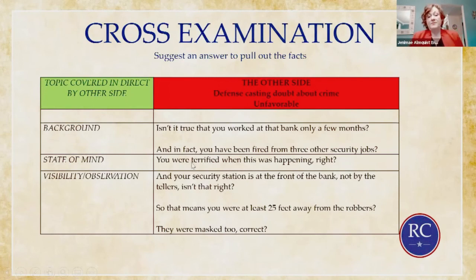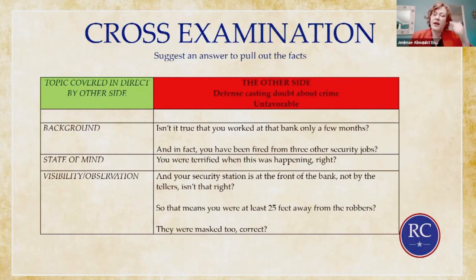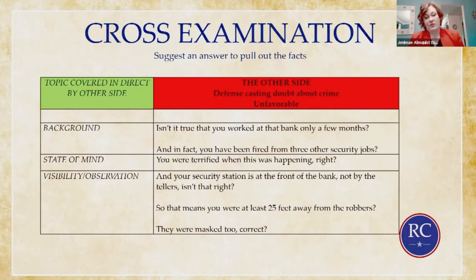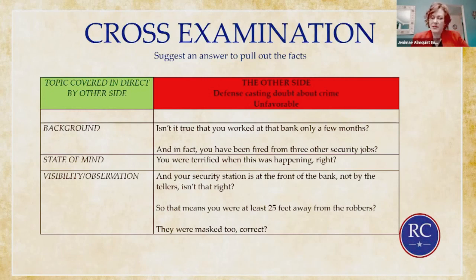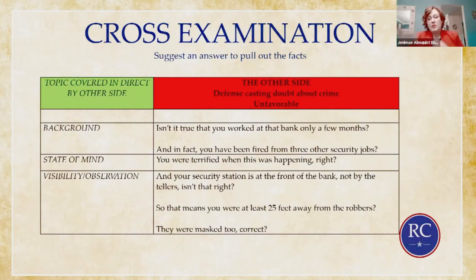How about the state of mind of the security guard? 'You were terrified when this was happening, right?' The jury starts making inferences and drawing conclusions based on facts being presented. Visibility and observation are very important, especially in criminal cases. The defense might say: 'Your security station is at the front of the bank, not by the tellers — isn't that right? So you were at least 25 feet away from the robbers. And they were masked too, correct?' Just like on direct, you're building a wall brick by brick — but on cross-examination, using leading questions, you're trying to take away those bricks so the whole wall tumbles.